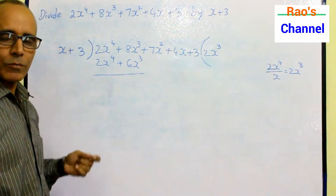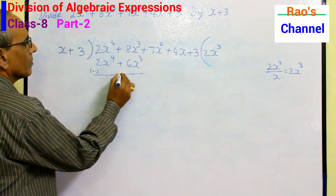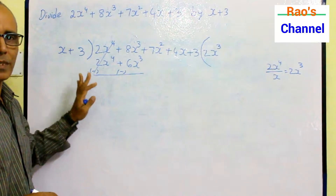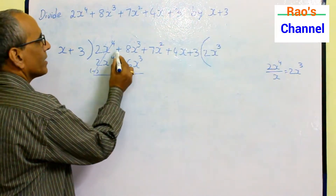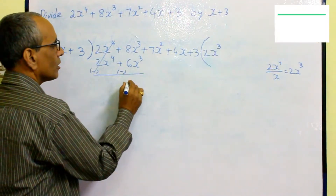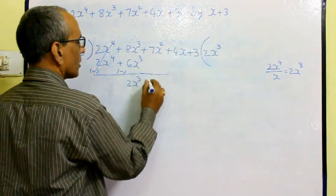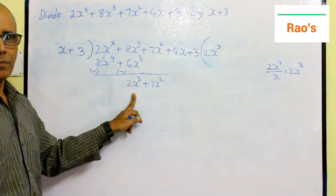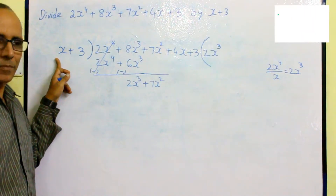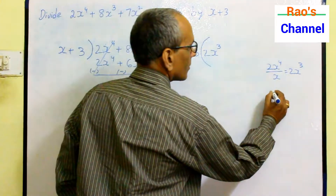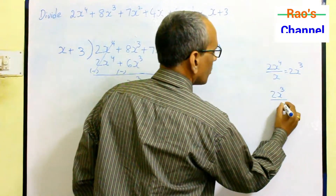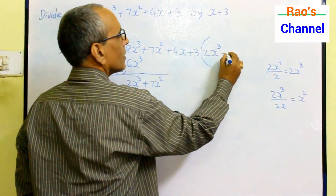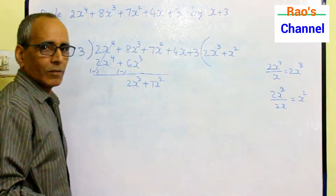As per the usual division, we subtract. 2x⁴ minus 2x⁴ gives 0 — they cancel. The result of 8x³ minus 6x³ is 2x³. Carry the next term to continue the division: plus 7x². Now 2x³ is the first term in the dividend part. The first term of the divisor is x, so 2x³ divided by x gives x². So x² is the next term in the quotient.